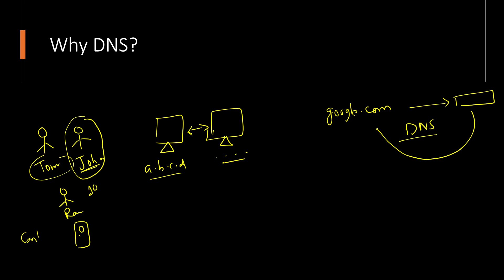So google.com is mapped to some IP address, and what the DNS server does is return that IP address. Then the browser can contact Google using this provided IP address. Now that we know why we need a DNS system, let's understand how the whole thing works.